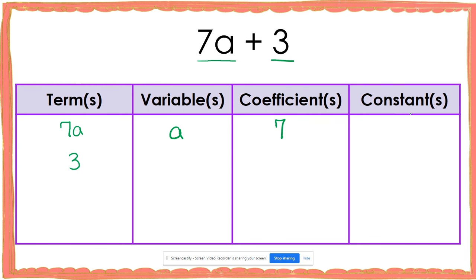Now we can look for any constants that might be in our expression. A constant would be a term that does not have a variable with it. I notice that I have a term of 3 that does not have a variable, so 3 is going to be my constant.